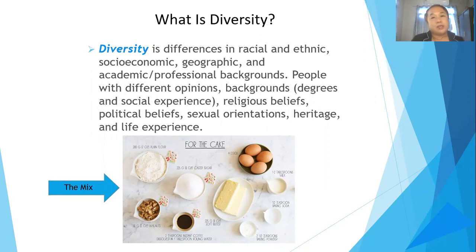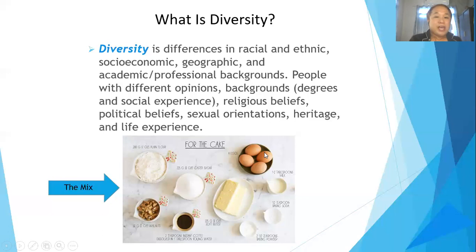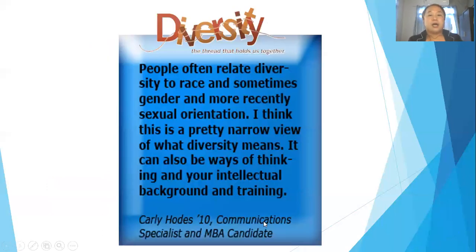For example, in our school we are surrounded with diverse students — coming from or having different opinions and backgrounds. In the PowerPoint, you can see a picture of ingredients for making a cake: we have eggs and flour. So meaning, in preparing a cake there are diverse ingredients. Similarly, according to Carly Hodes, diversity refers to things people often relate to race, gender, and more recently sexual orientation.